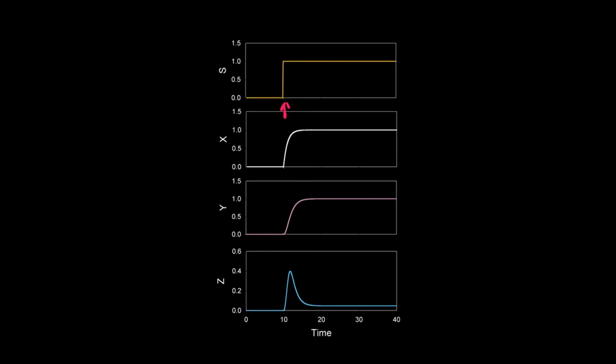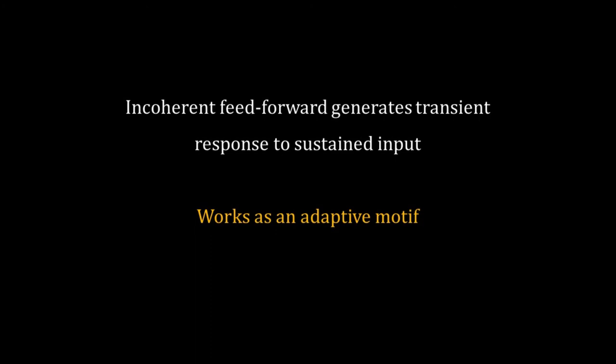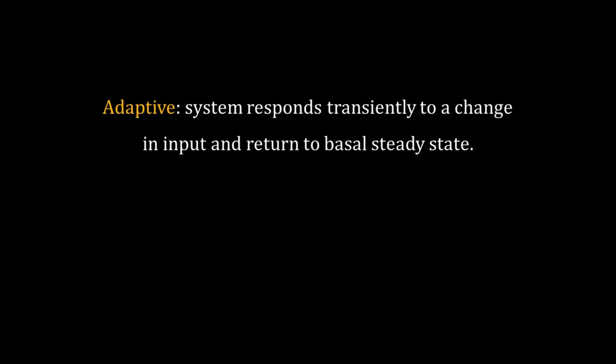The ability to generate a transient response for a sustained input allows an incoherent feed-forward to work as an adaptive motif. By adaptive, we mean the ability of a system to respond transiently to a change in the input signal and then return to the earlier steady state.